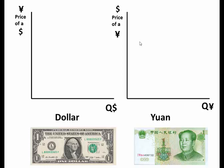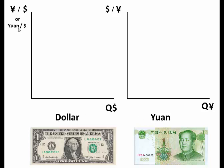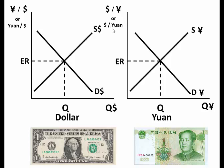Probably the easiest way to write the y-axis is to put the name of the other currency divided by one dollar. Make sure the dollar is on the bottom of the division. So you have Yuan on top and dollar on the bottom, or you can write the foreign currency divided by the dollar, or the dollar divided by the foreign currency name — whichever way you prefer. It's simply a clearer way to understand the y-axis.